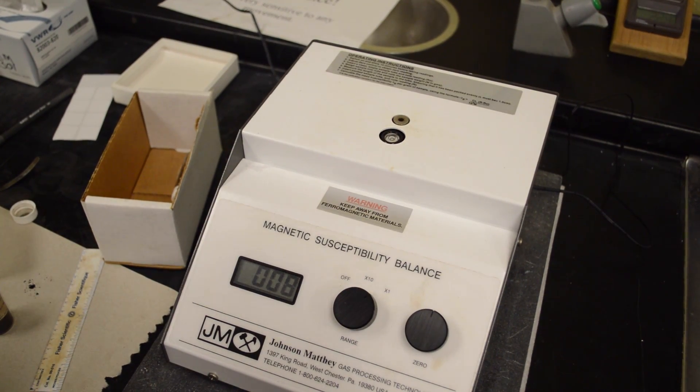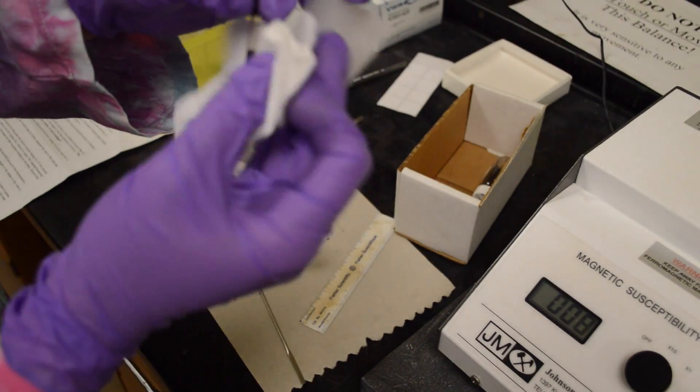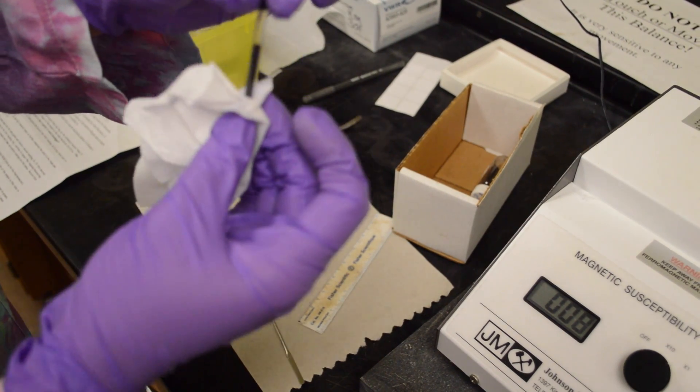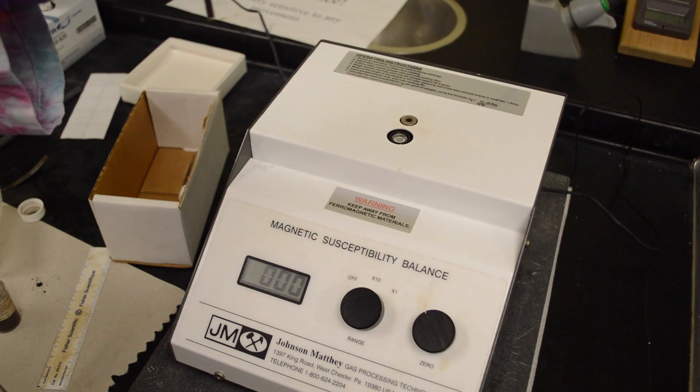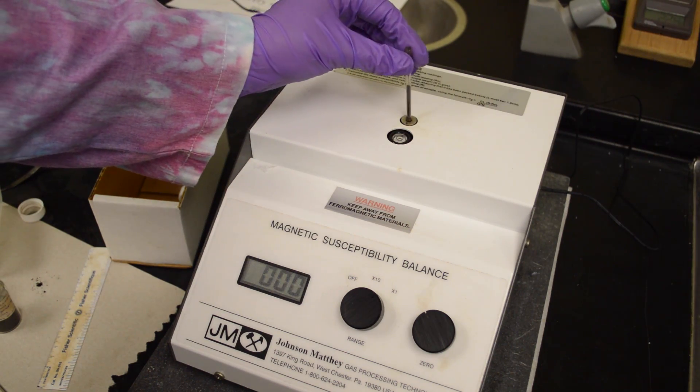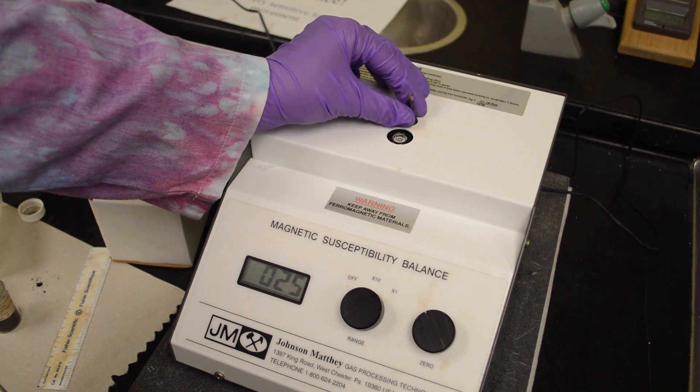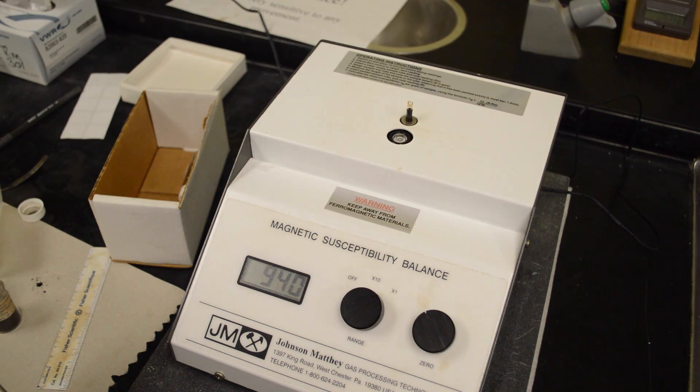Before you put the vial into the balance, wipe it off with a Kimwipe to ensure that there is no product on the outside of the tube. Then place the packed tube into the balance and take the initial reading.